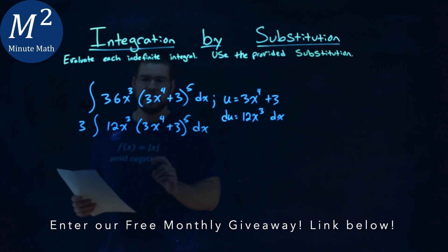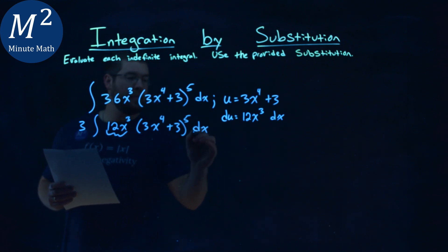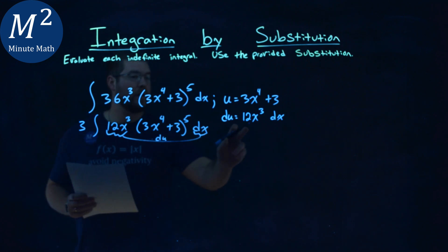And so now we can see that this 12x to the 3rd power and dx is just our du right there.